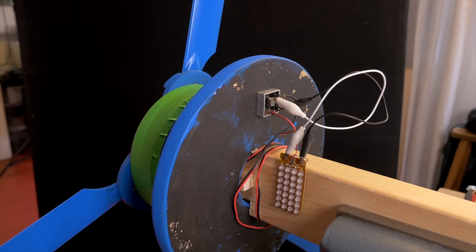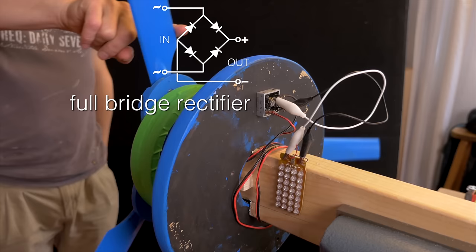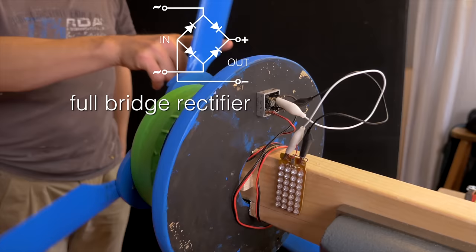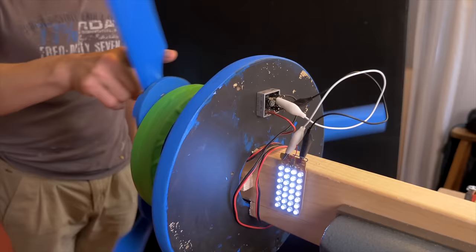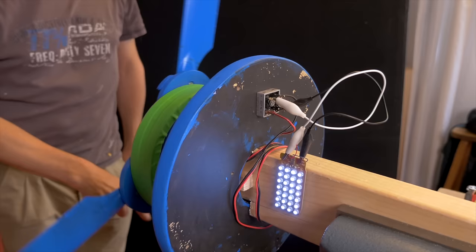The first thing to do is to connect a full bridge rectifier which contains 4 diodes, transforming the AC into pulsed DC. When connecting a small LED panel to it and turning the rotor very slowly, you can see the pulsing DC current. Spinning the rotor faster will produce too high a voltage and kill the LEDs. So don't do that.